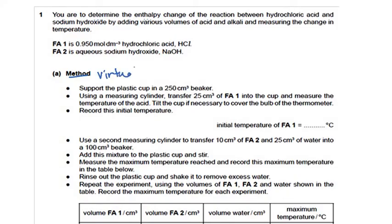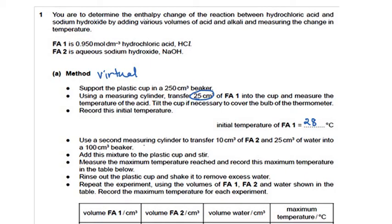This is a virtual reading — I had done the experiment and the practical myself, and based on that I'll be giving you the readings so you can rely on them and learn the further calculations. Here it says you need to measure the initial temperature of FA1. FA1 is 0.950, taken in a beaker, and the volume used for FA1 is 25 cm³. For me, the initial temperature of FA1 was 28°C.